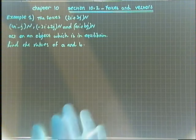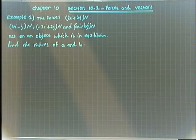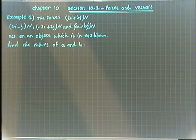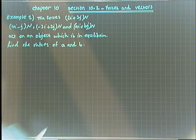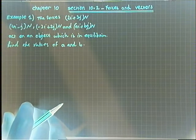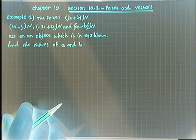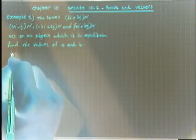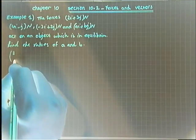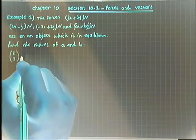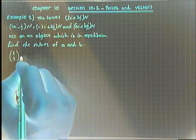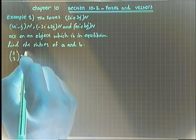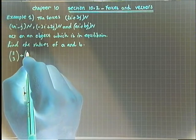The most important point here: if the object or particle is in equilibrium, it means the sum of the forces must be equal to zero. So let's write down all the forces in the form of a column vector — it's always easy and convenient to add or subtract vector forces when they're in column vector form.